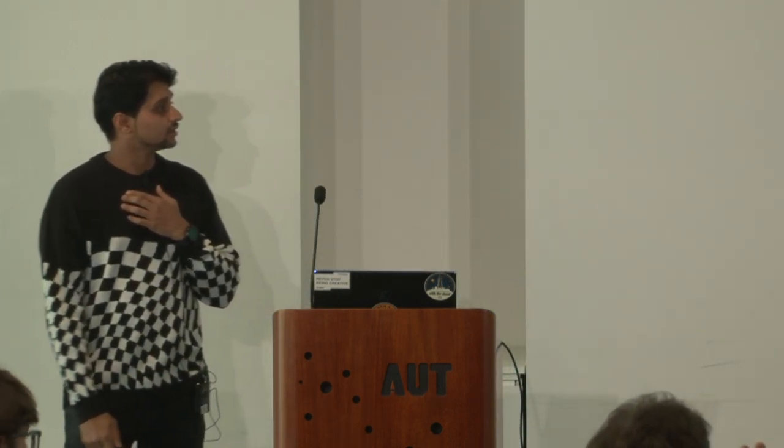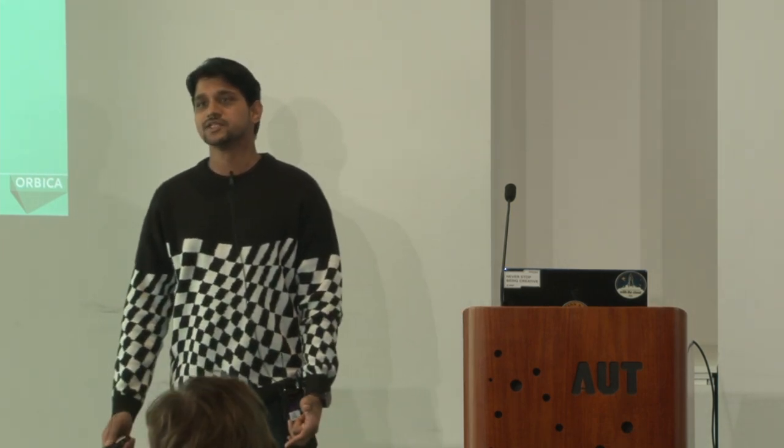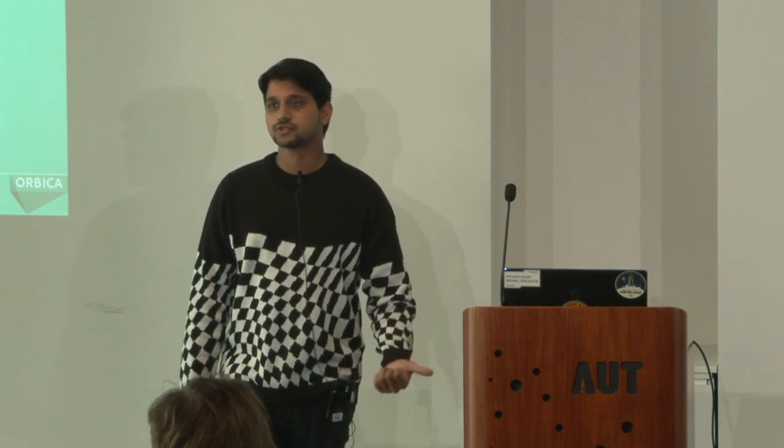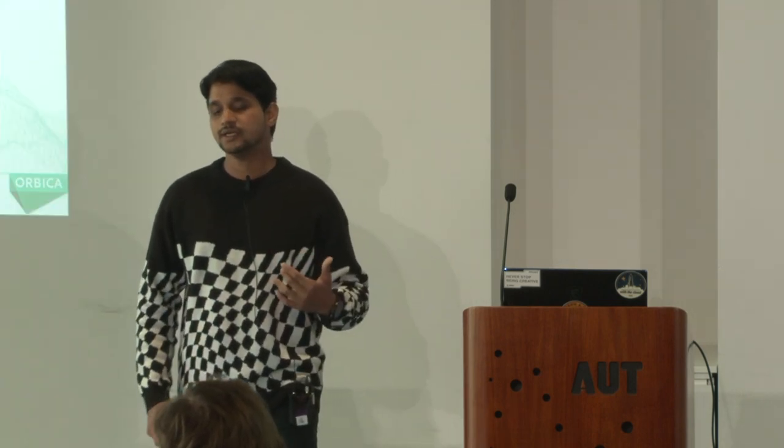My name is Sagar. I'm a senior geospatial data scientist at Orbica — not a GIS person, so don't ask me a GIS question at the end. I'm mainly on the data science side. I joined Orbica six years ago, mainly integrating geospatial with AI technologies — what sort of risk is associated with those technologies, how we can overcome the risk, what problems we face, and how we tackle those problems.